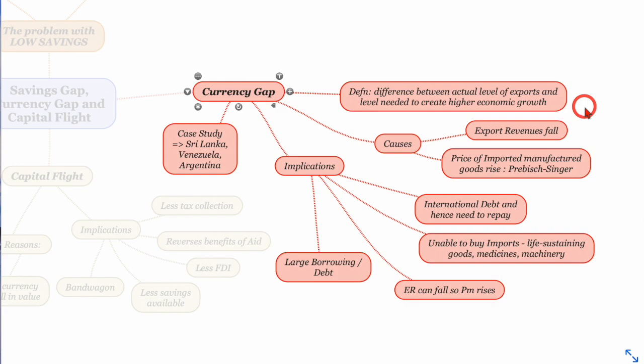So for example the implications of having a currency gap is that you're unable to buy imports, you're not earning enough on your exports and therefore you have to borrow, bring in debt as a country and this international debt will need repaying. And if you're not able to buy imports, a lot of imports with your low level of exports then obviously the exchange rate because of this debt can also fall as people, investors leave the country, take their savings out of the country and that can cause import prices to rise. Which causes another problem with buying enough life-sustaining goods and medicines. So again you can see this sort of vicious circle going on.